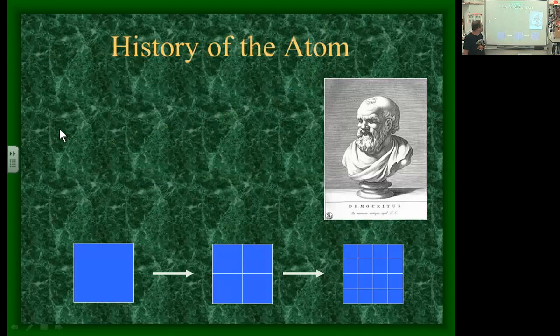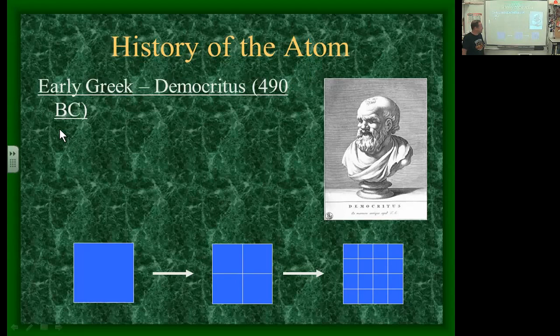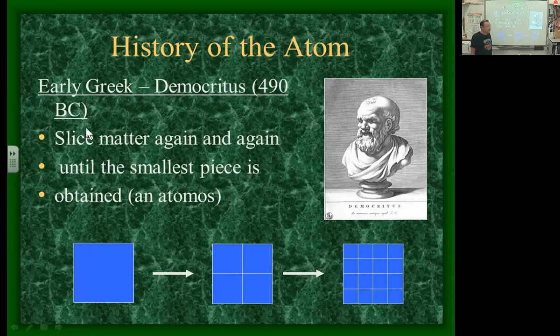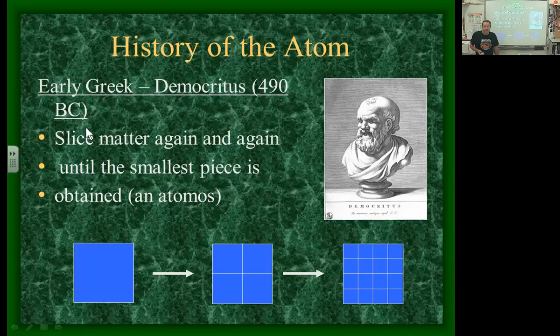A long time ago, around 490 BC, there was this guy named Democritus. Democritus theorized that if you split something again and again, you'd eventually come to a building block called an atom. He was the first to propose that everything was made of atoms. Just imagine taking a rock, breaking it down smaller and smaller — sooner or later you get to a basic building block of whatever matter it's made of.